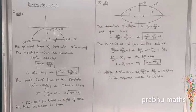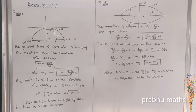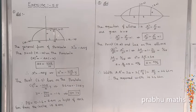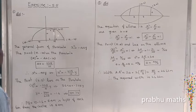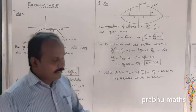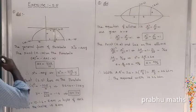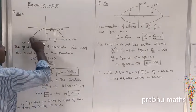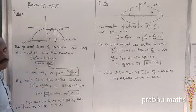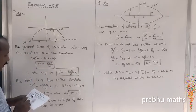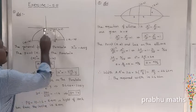Exercise 5.5, first sum: a bridge is a parabolic arch with 10 meters height in the center and 30 meters width at the bottom. Find the height of the arch 6 meters from the center on either side. First, let us take the x-axis and y-axis. The parabolic arch has 10 meter height.